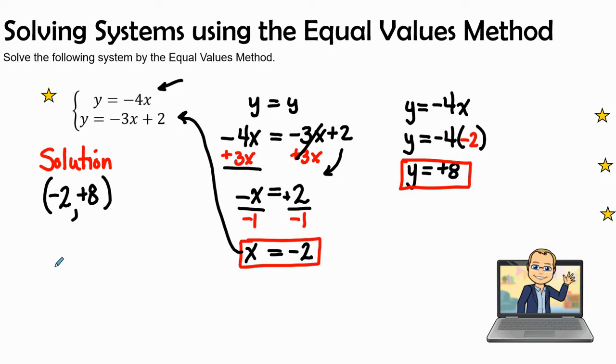The solution or the answer to this system when I solve it using the equal values method is negative 2, positive 8. And that's where those two linear functions or those two lines are going to cross at that exact point.